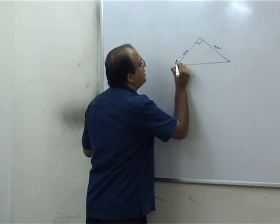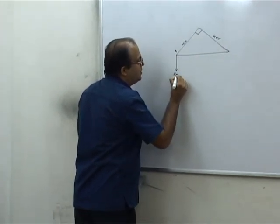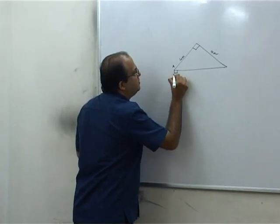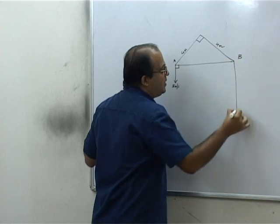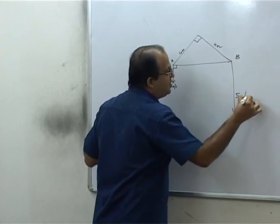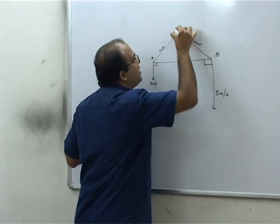Point A is moving at a speed of 3 meters per second in this direction. Point B is moving at a speed of 5 meters per second in this direction. We have to find the speed of point C.